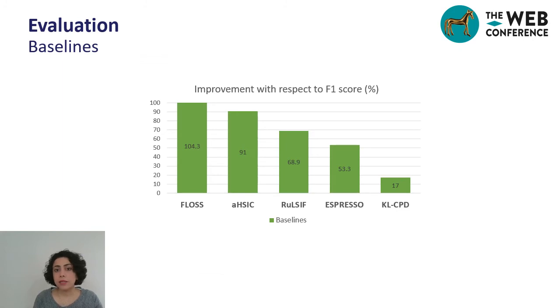We showed that TSCP2 is able to outperform both non-deep learning and deep learning baselines with respect to F-score average over all of the datasets and parameters.